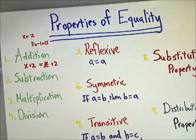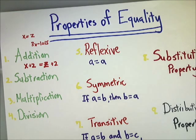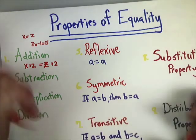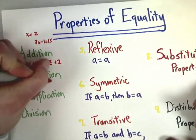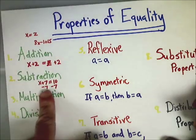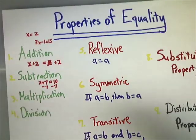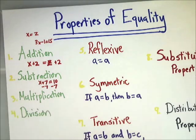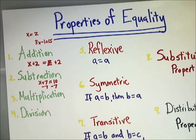Same thing for subtraction. If you subtract something from both sides of an equation, your proof is the subtraction property of equality. So when you have X plus 7 equals 10, it's okay to subtract 7 from both sides. Same thing when you multiply or divide. By the way, it's not the operation that's shown - it's the operation that you use to get to the next step.